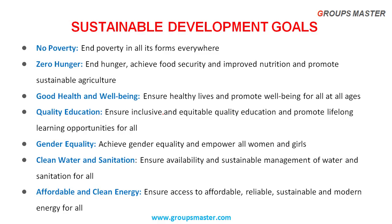Next are the Sustainable Development Goals. These goals aim to achieve sustainable development globally. Goal 1: No Poverty — end poverty at all levels. Goal 2: Zero Hunger — end hunger, improve nutrition, and promote sustainable agriculture. Goal 3: Good Health and Wellbeing — ensure healthy lives and promote wellbeing for all at all ages.